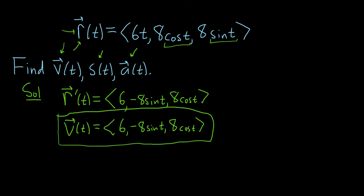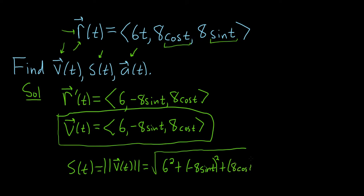To find the speed, we have to take the magnitude of the velocity. So the speed is equal to the magnitude of the velocity. And to find the magnitude, we simply take the square root, and we square each of the components. So we square the 6, and then we square the middle component. So negative 8 sine t squared, and then we square the last component. So 8 cosine t squared.